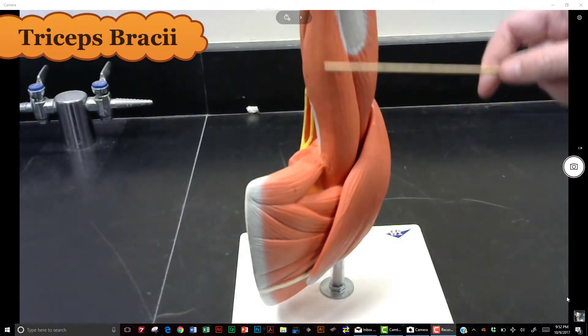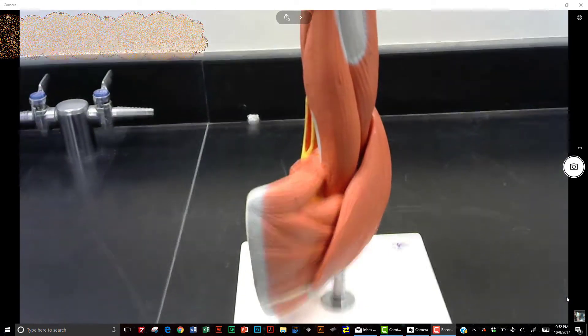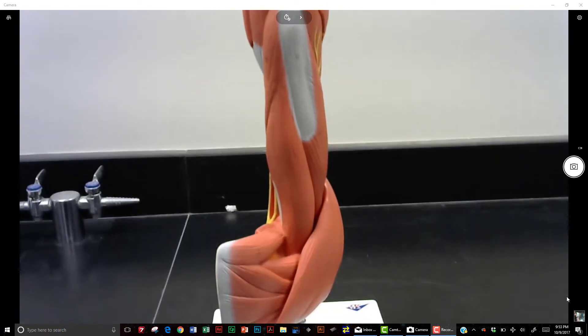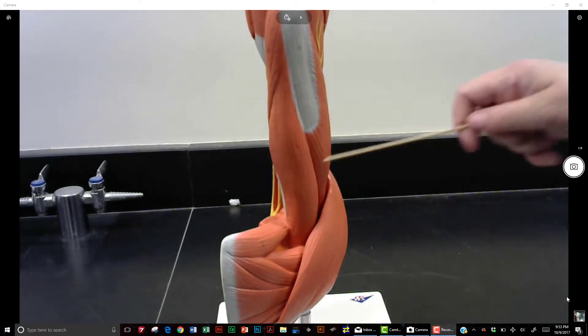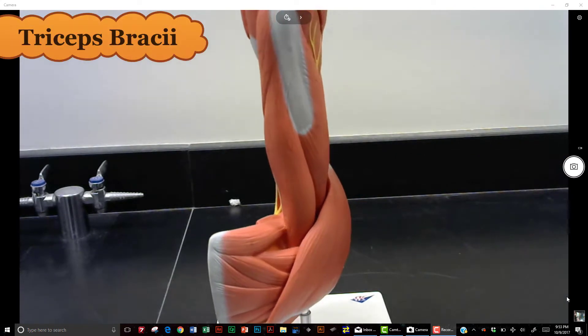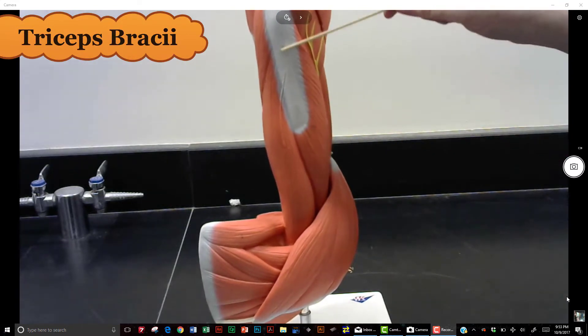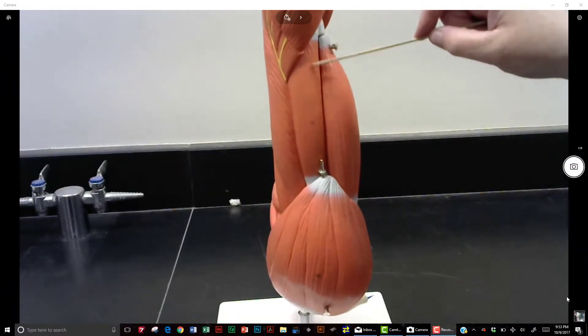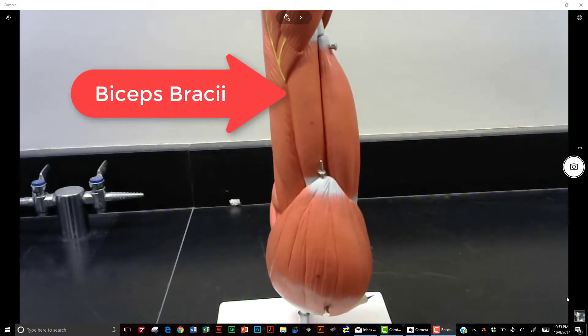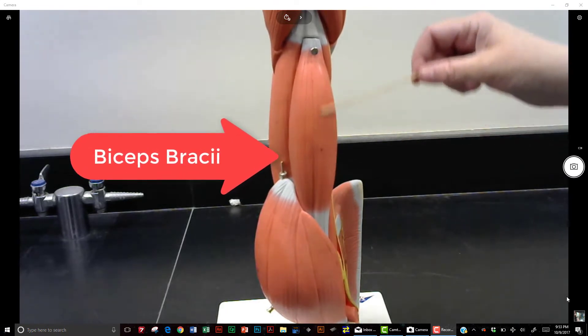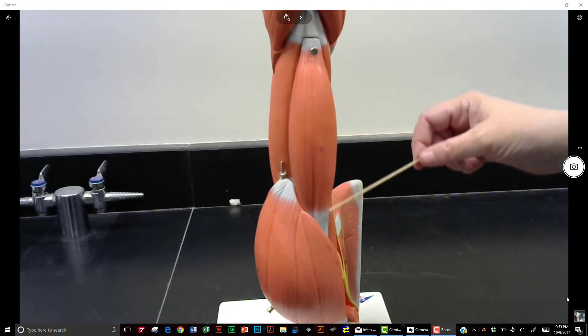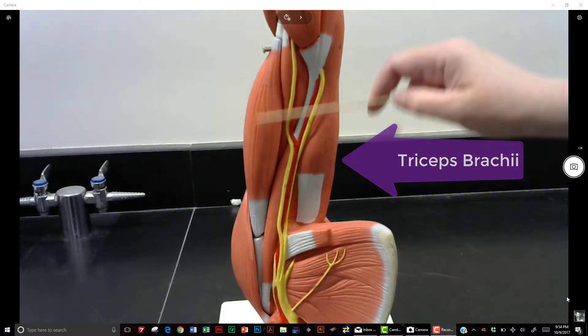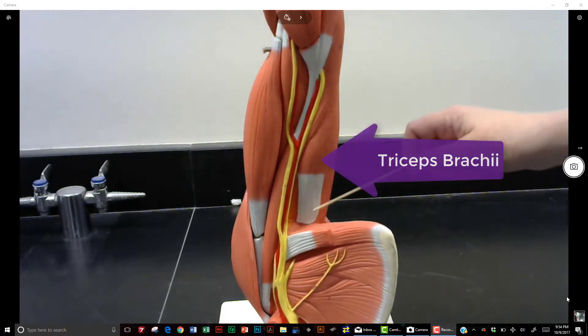This would be triceps brachii. Okay, this is triceps brachii. This is also triceps brachii. This is biceps brachii, and this is biceps brachii. When you're looking at the inner arm, this is biceps brachii. Down here is triceps brachii.